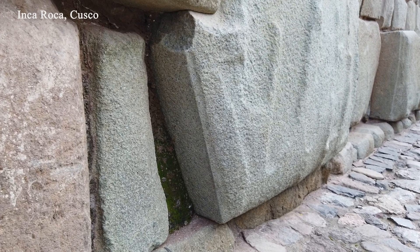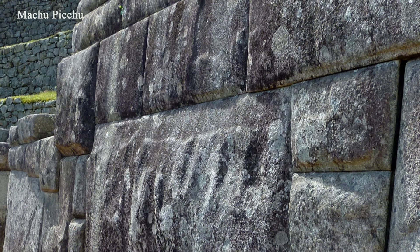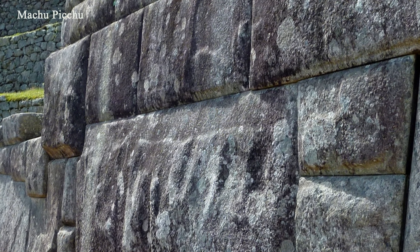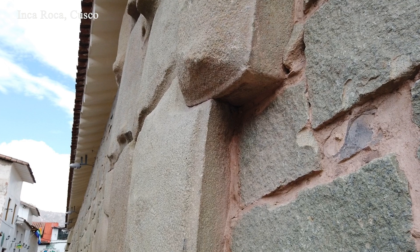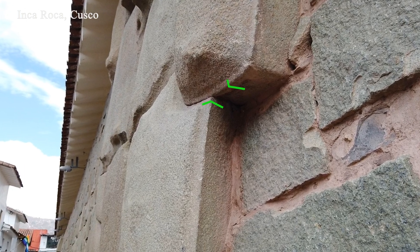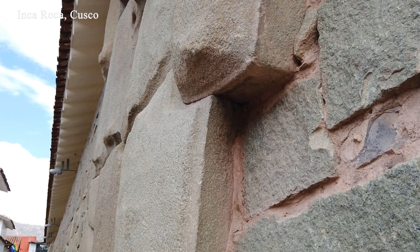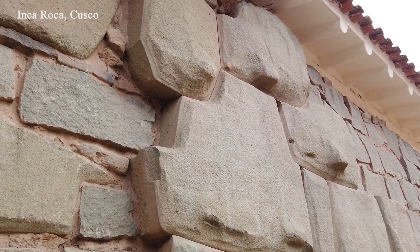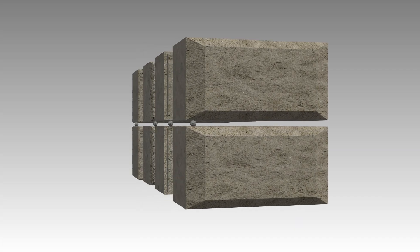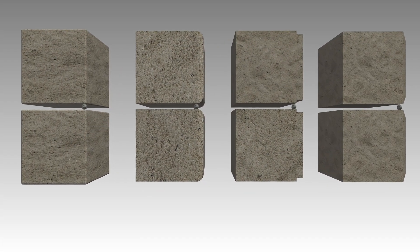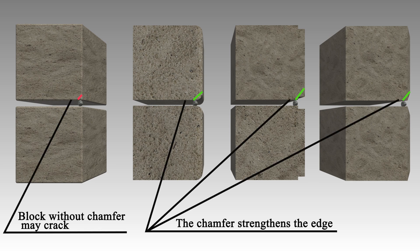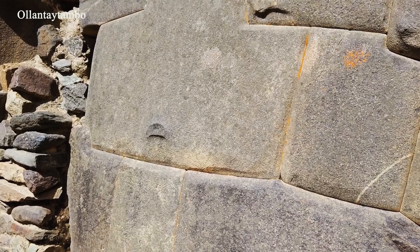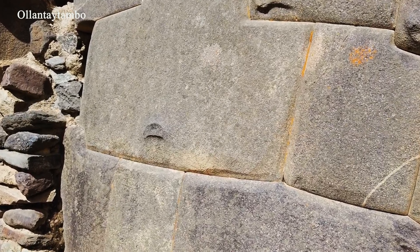In freeform and honeycomb masonry, the bevel cannot serve the purpose of maintaining coarse alignment — one of the primary functions of a chamfer — since this requires the bevels to align along a continuous line. The facing surfaces of polygonal blocks are always dressed, so creating a bevel could not have resulted in significant labor savings. As for preventing chipping, these bevels cannot serve that function either, since they often form angles close to 90 degrees, which in no way strengthens the block's edge.